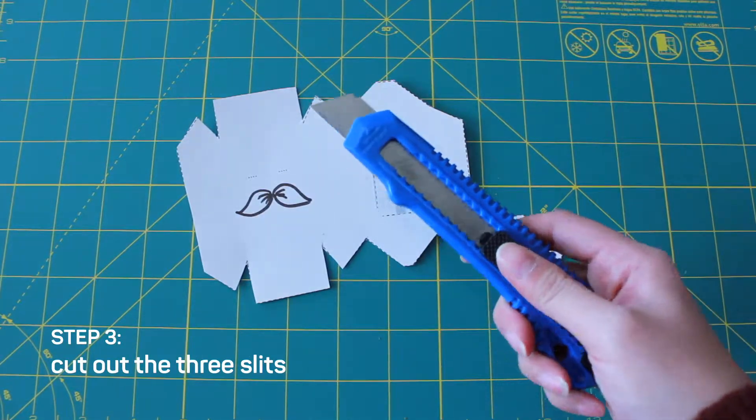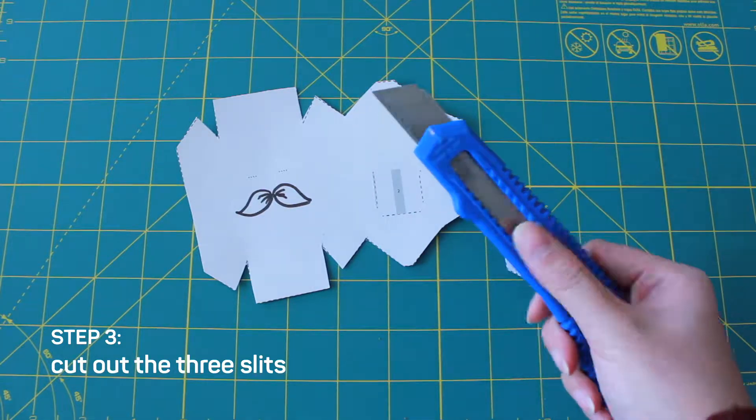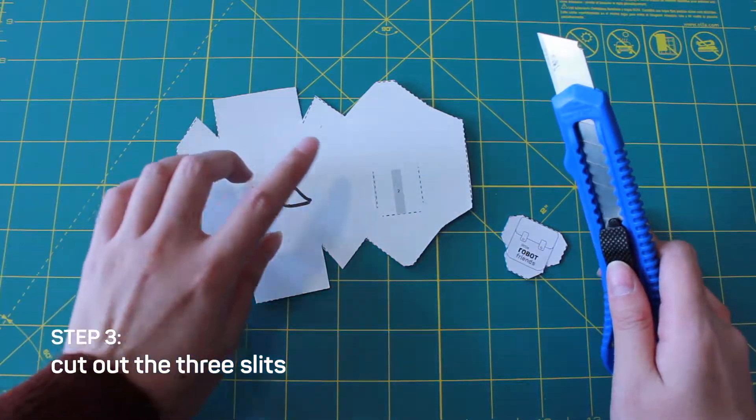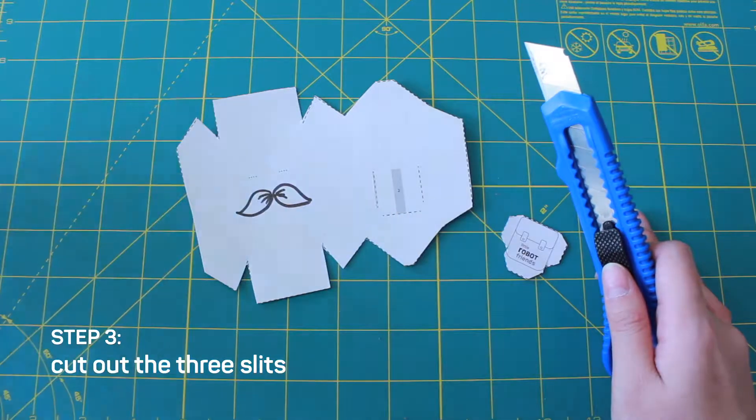Step three, use an exacto knife to cut the three slits here, here, and here.